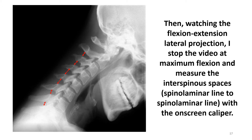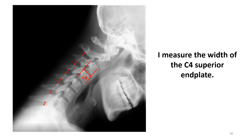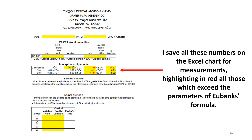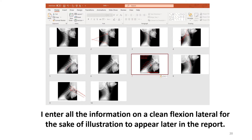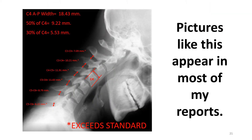Watching the flexion-extension lateral projection, I stop the video at maximum flexion and measure the interspinous spaces — that's spinal laminar line to spinal laminar line — with an on-screen caliper calibrated prior to each use. I also run the video several times to get a sense of the opening of the spinous processes, as the initiation of motion in the posterior elements starts at the top at occiput C1 and proceeds sequentially down the spine. Any variation from this order is abnormal. Then I measure the width of the C4 superior endplate and save all numbers on the Excel chart, highlighting in red all those which exceed the parameters of Eubanks' formula.